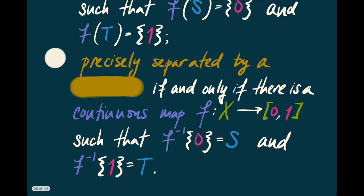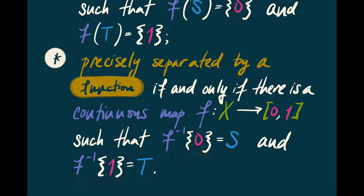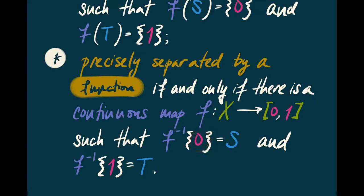Finally, S and T are precisely separated by a function if and only if there's a continuous map from X to [0, 1] such that all and only those points of S go to 0, and all and only those points of T go to 1. In other words, the inverse image of 0 is S, and the inverse image of 1 is T. Notice that in this condition, S and T will have to be closed: since {0} is closed, its inverse image must be closed, forcing S to be closed, and similarly T.